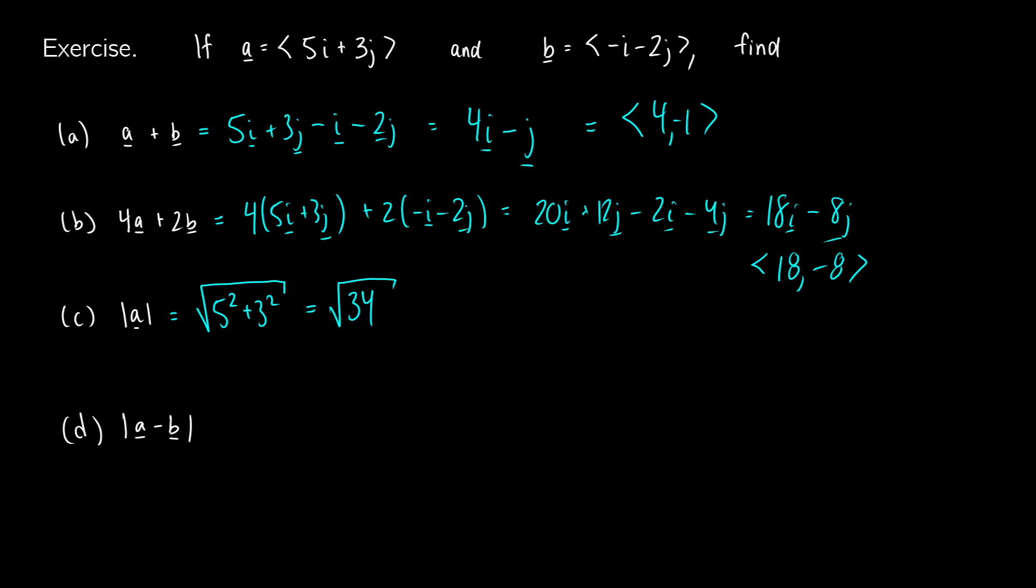Now for the length of a minus b, what we're going to do is we're going to take our two vectors. So 5i plus 3j, and we're going to subtract negative i minus 2j. And what we're going to get is the vector. So we're taking 5i and we're adding an i. That's going to be 6i. We're taking 3j and we're adding 2j. So 5j, which means I just put the length here. This will be the square root of 6 squared plus 5 squared, which will give us 36 plus 25, which will be the square root of 61.